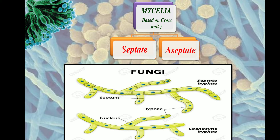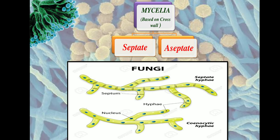The presence of septa gives mechanical support to the hyphae. So the two types of mycelia based on the cross wall present inside the hyphae are septate and aseptate — aseptate is also called cenocytic.